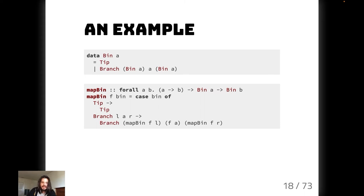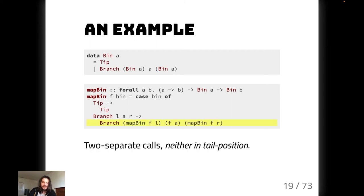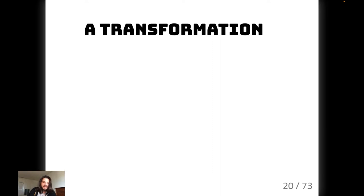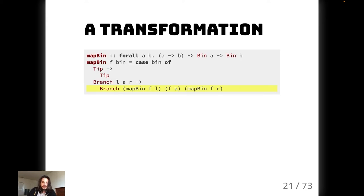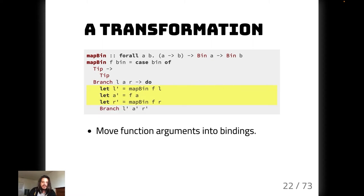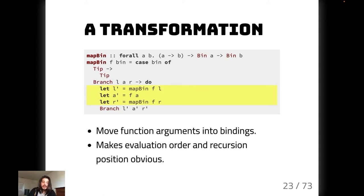We'll look at an implementation of `map` for this data type. This is actually what the compiler will derive for you. Unfortunately, this is not stack safe because we have two separate recursive calls and neither of them are in tail position. To make it clearer, we move all function arguments into bindings — this makes the evaluation order explicit and shows obviously that this is not in tail position because we have to call these functions, get the result, and do something with it afterwards.